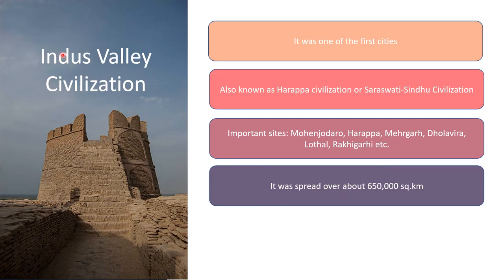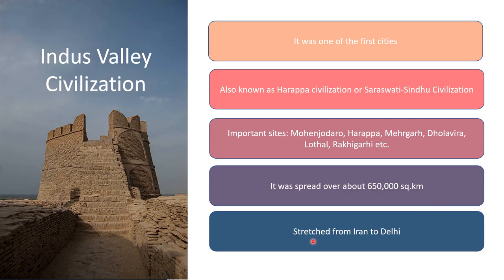The Indus Valley Civilization spread over about 650,000 square kilometers. It stretched from Iran to Delhi at present day — they may have been called different names before, but right now they are called Iran and Delhi. It also stretched southward till the Godavari River.